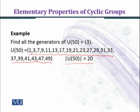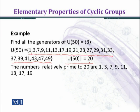The numbers relatively prime to 20 are 1, 3, 7, 9, 11, 13, 17, 19.